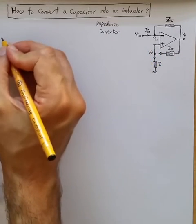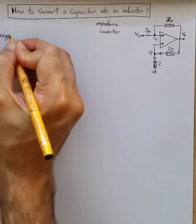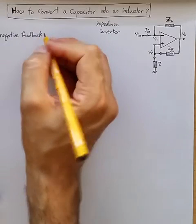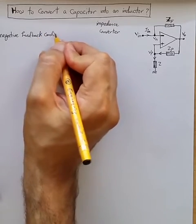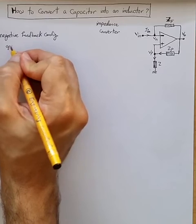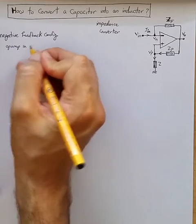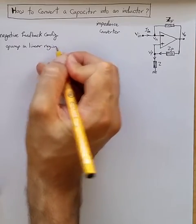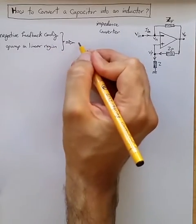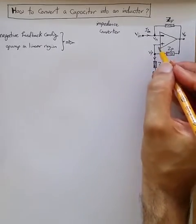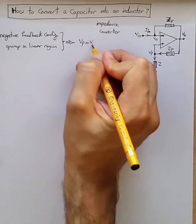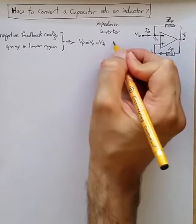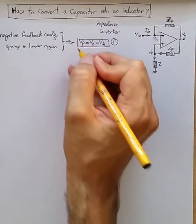So we can say because of negative feedback configuration and because we are assuming op-amp in linear region, from these two we can say virtual short holds, so VP is equal to VN and VN is equal to VIN. That's relationship one because of virtual short.